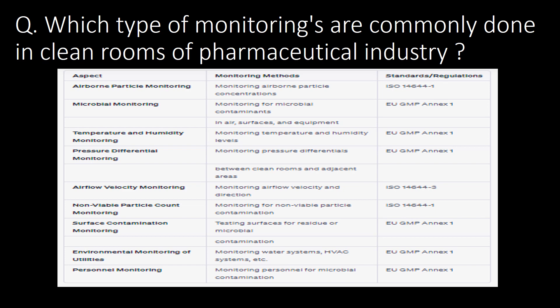Which types of monitoring are commonly done in clean rooms of the pharmaceutical industry? You can refer to the table below for various types of monitoring commonly done in clean rooms. These include airborne particle monitoring, microbial monitoring, temperature and humidity monitoring, pressure differential monitoring, airflow velocity monitoring, NVPC count monitoring, surface contamination monitoring, environmental monitoring of utilities, and personnel monitoring.